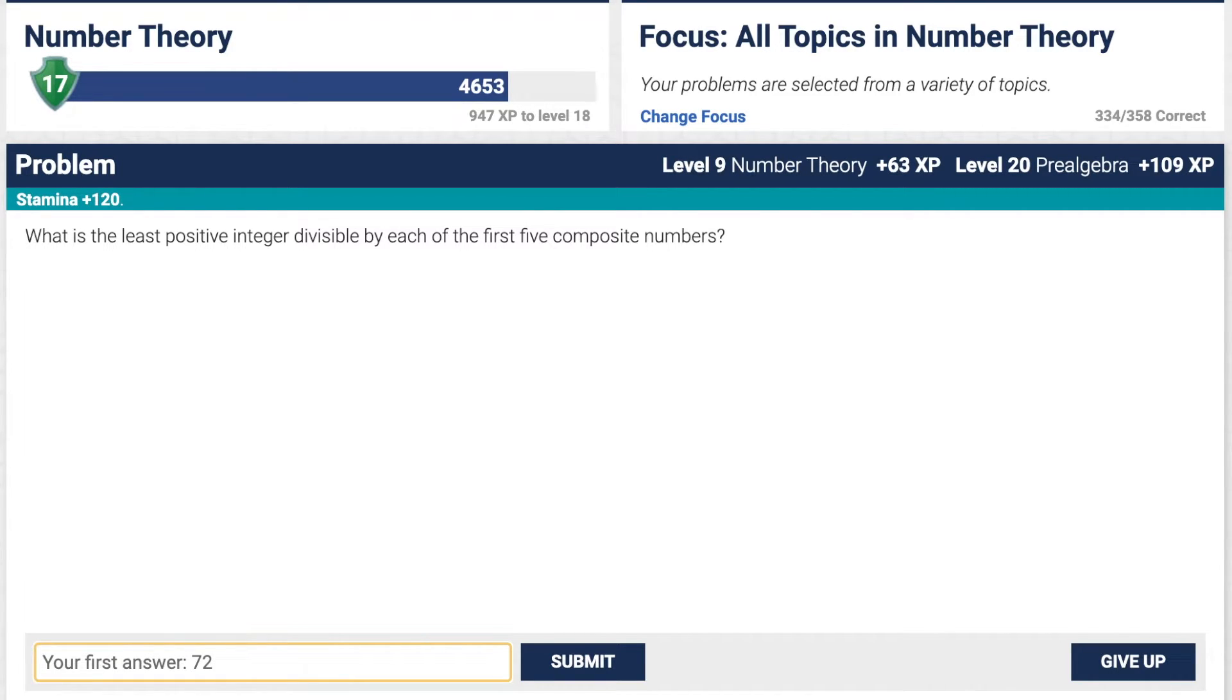Hmm, what did I do wrong? Oh, it's first 5, sorry. So it's 4, 6, 8, 9, 10. There we go. Okay, so with this extra 10 in, that means we also have a factor of 5, so that means we're going to do 2 cubed times 3 squared times 5, which is just 72 times 5, and that is going to be 360. There we go.